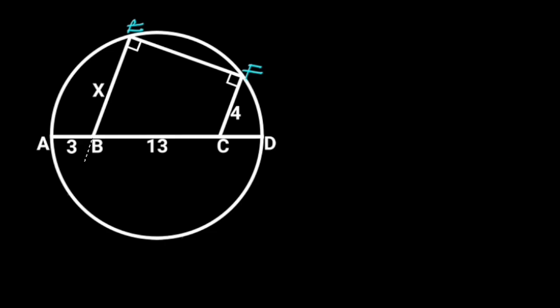Next, let's extend line EB and FC to touch the circumference of the circle. Let this point be G and this point H.